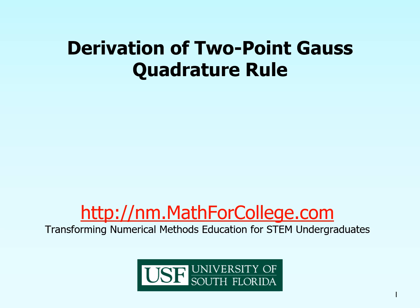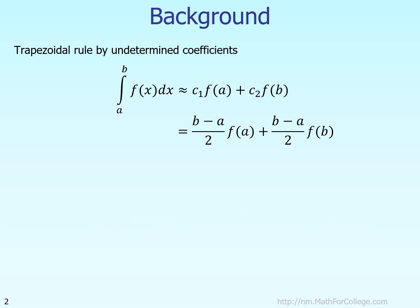In this segment, we'll talk about how to derive the two-point Gauss quadrature rule of integration. To understand this derivation, we should start with the trapezoidal rule and derive it by the method of undetermined coefficients.